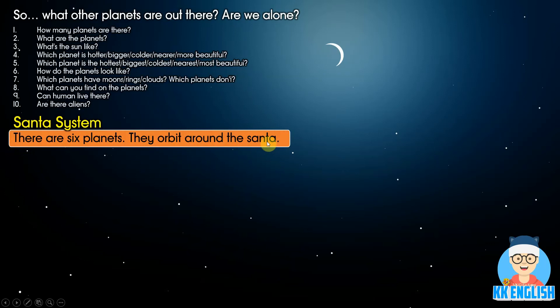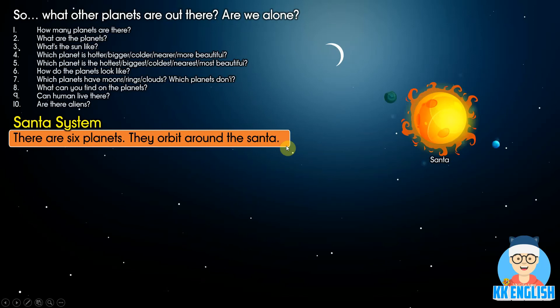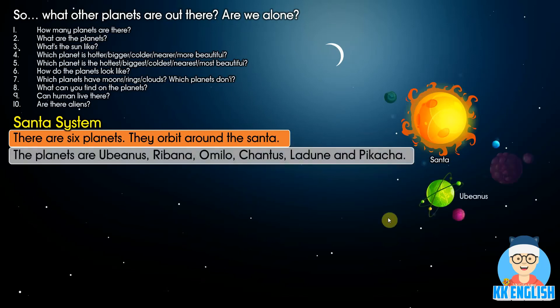They orbit around the Santa star. The Santa star looks like our Sun. So, number two: what are the planets? The planets are Eubinus, Rabbana, Omilo, Santis, Ladune, and Picaccia.